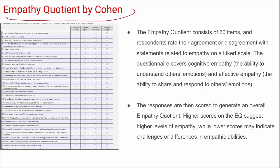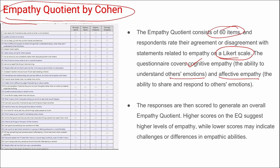Next is the Empathy Quotient by Cohen. The questionnaire consists of 60 items rated on a Likert scale. It covers cognitive empathy — the ability to understand others' emotions — and affective empathy — the ability to share and respond to others' emotions. Responses are scored to generate an overall empathy quotient, where higher scores suggest higher levels of empathy and lower scores may indicate challenges in empathic abilities.